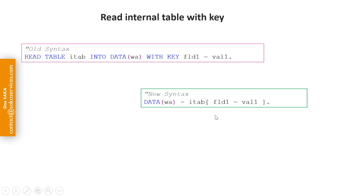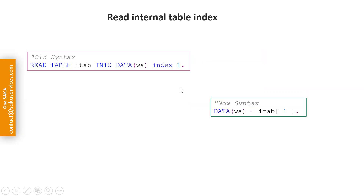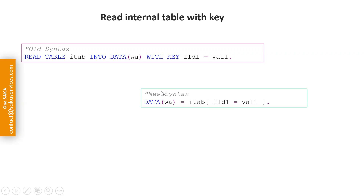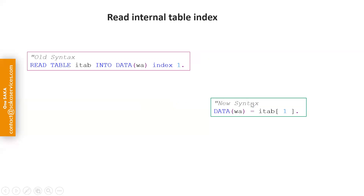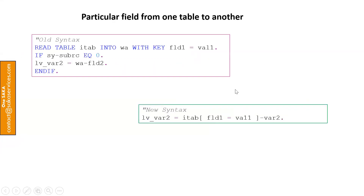The code is very short and easy to understand. We are getting data from the internal table matching field one with value one. If you want to read from an index, the old syntax requires providing the index number and reading the internal table into a work area. The difference is: with key-based reading you give the field value, and with index-based reading you give the index number.